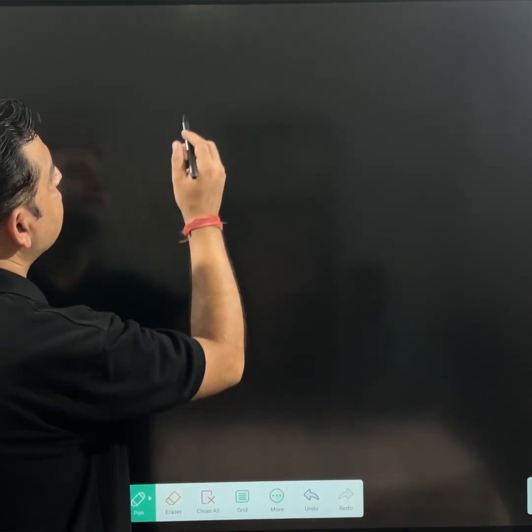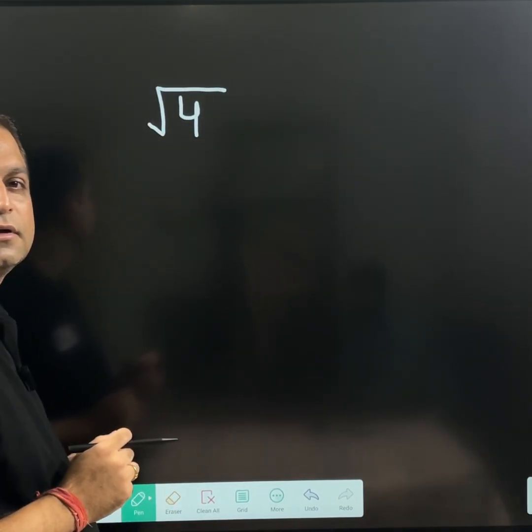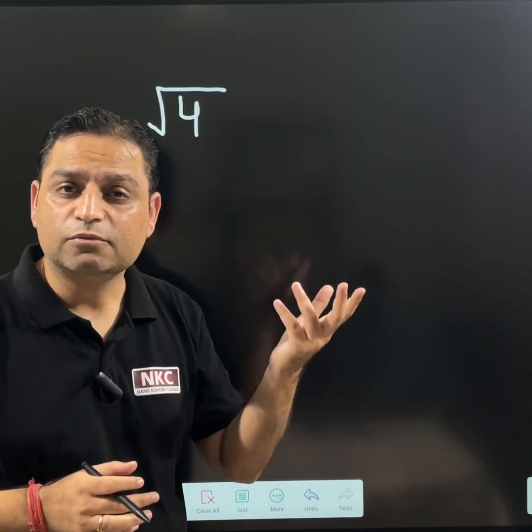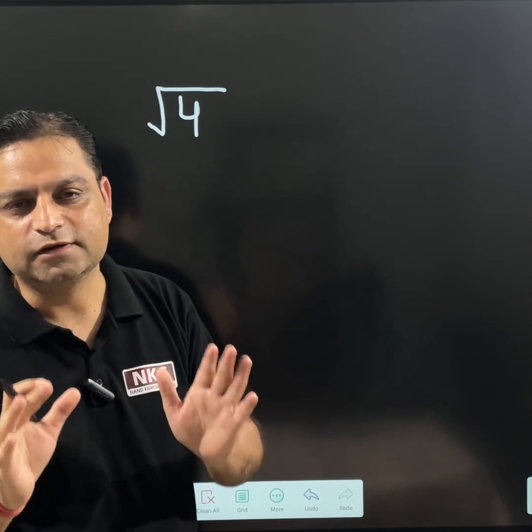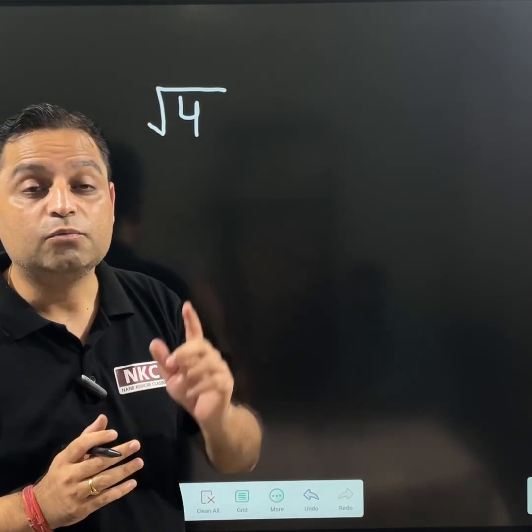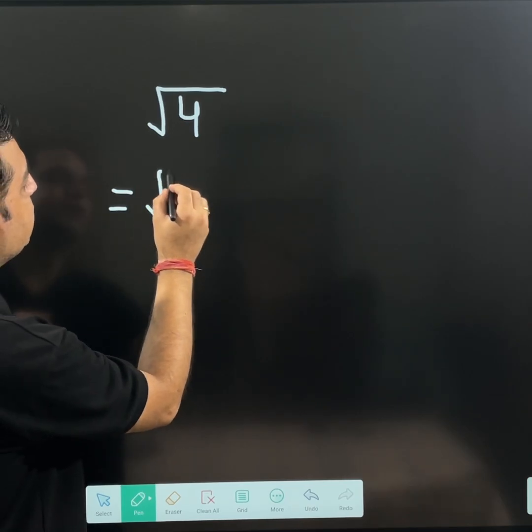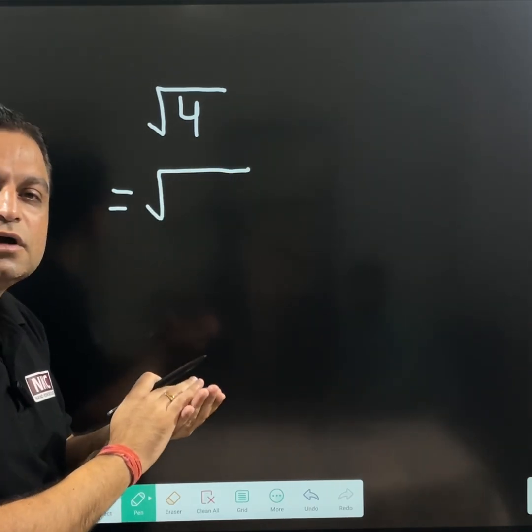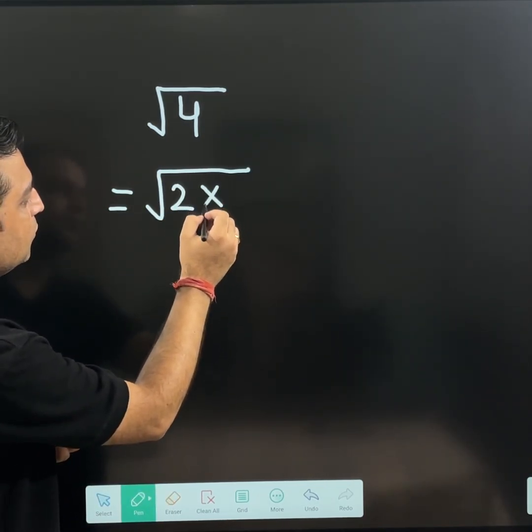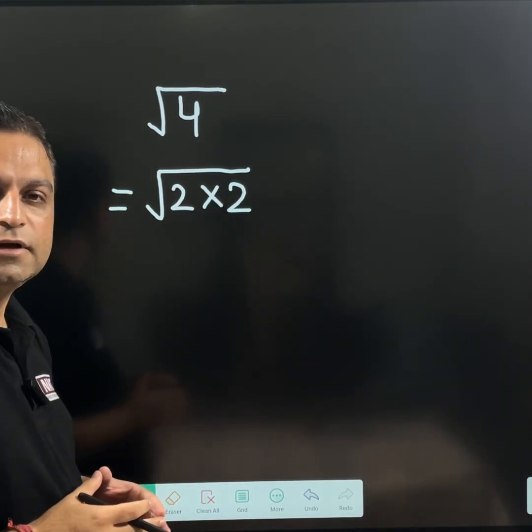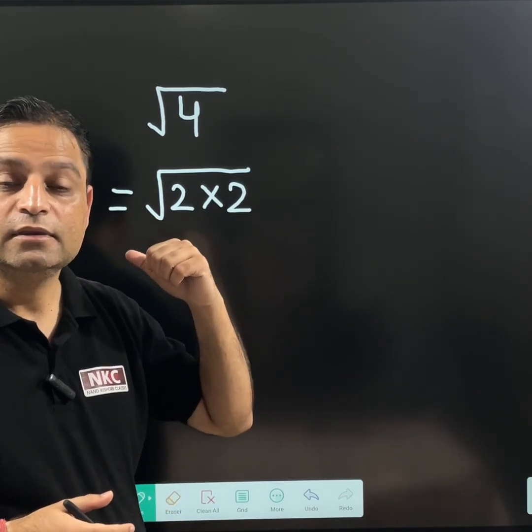Let me start with, let us suppose you need to find square root of 4. Why I am starting from square root of 4? Because I want to take a simple value so that concept remains clear. Now, prime factorization of 4. That means splitting up 4 into product of its prime factors. 4 can be written as 2 multiply 2.